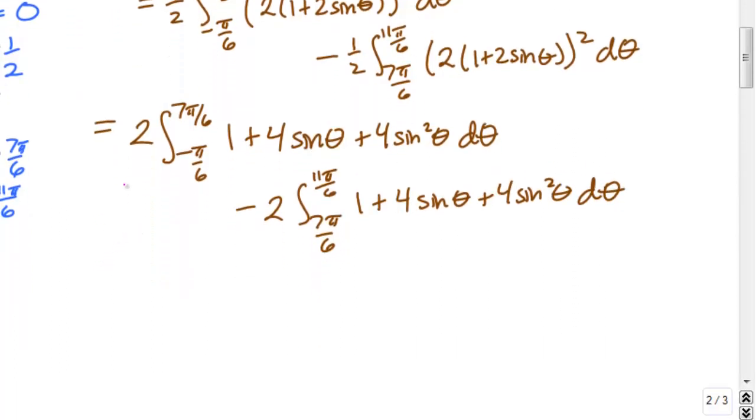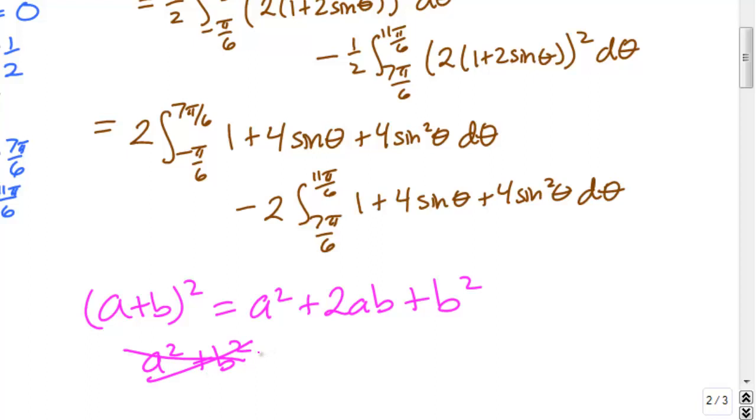Don't forget your basic algebra. The quantity (a + b)² is a² plus 2ab plus b². Very often I see students make the common mistake in these problems of writing it as a² plus b². Don't make that mistake.